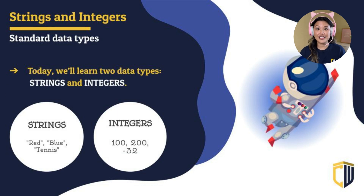For today, we're going to dive a little bit deeper into two different data types: the integers and the strings. Here you see some examples of the strings and the integers. Is there anything maybe you notice about each of these types of data?